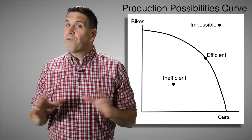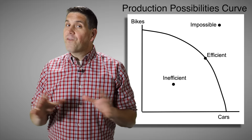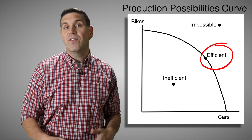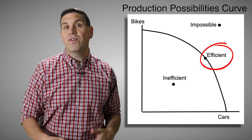Let's jump into the graphs of microeconomics. The first graph you learn in any economics class is the production possibilities curve or frontier. It shows you can produce two different goods. Any point outside the curve is impossible, any point inside the curve is inefficient, and any point on the curve is efficient.